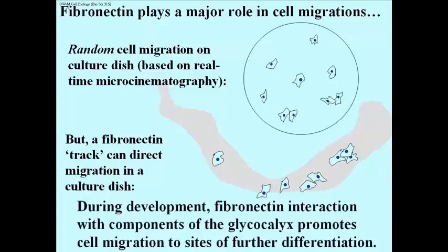This is useful because during development, an extracellular matrix forms along sheets of tissue, and newly differentiated cells can move along this track from wherever they originated to where they have to be before they can differentiate any further. This is very important during the formation of an embryo and the development of fetal tissues and so on.